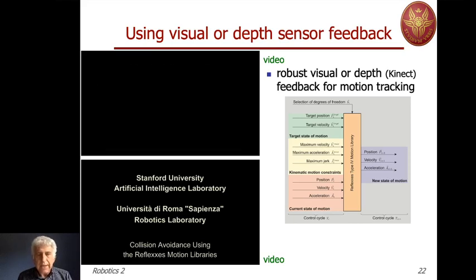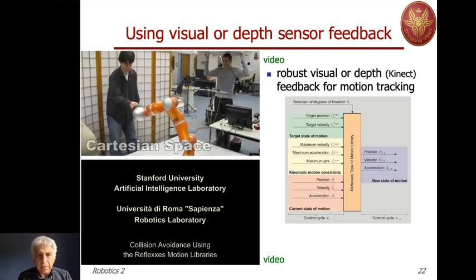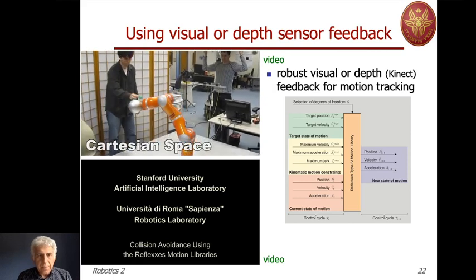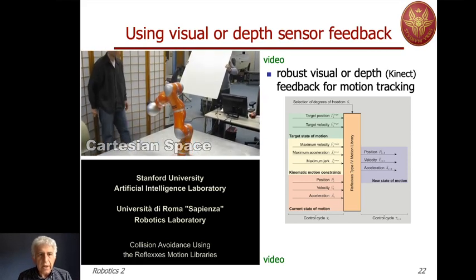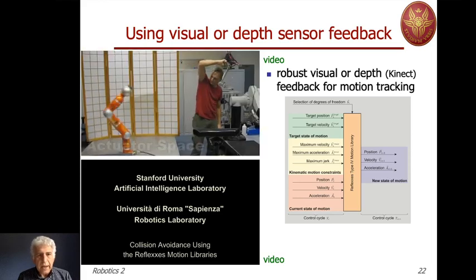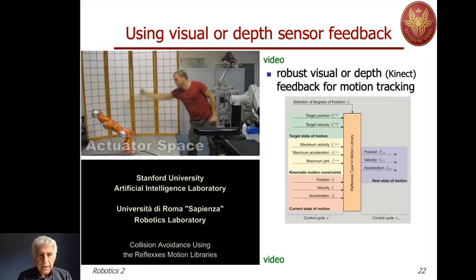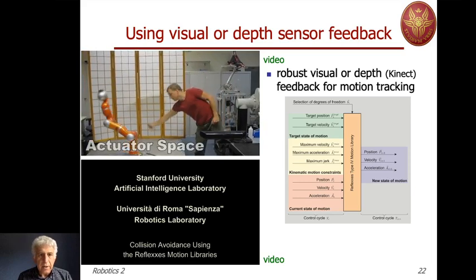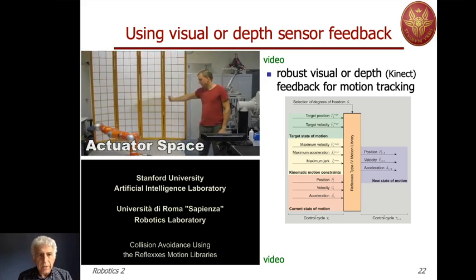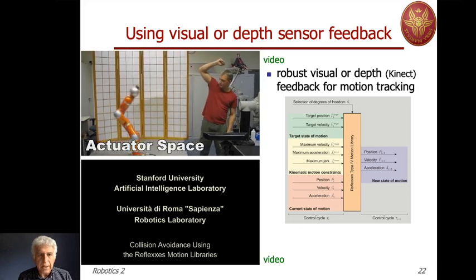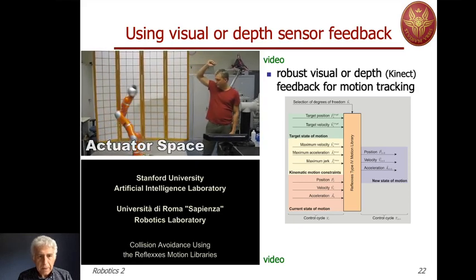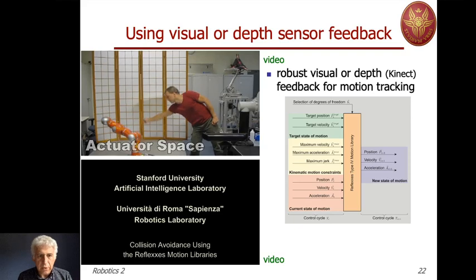On the side you will see the stereo camera. The user is moving a yellow ball and the robot is following it. In the second part, there is a Kinect looking at the human. The human is moving his arm and the robot is replicating the same configuration, with some delay of course.